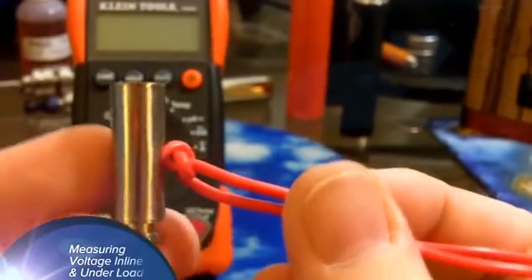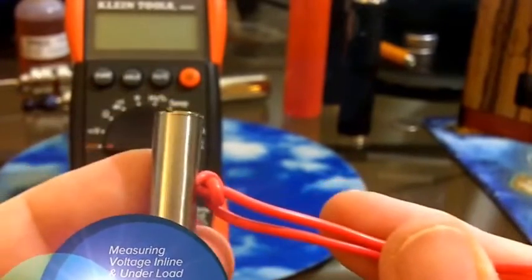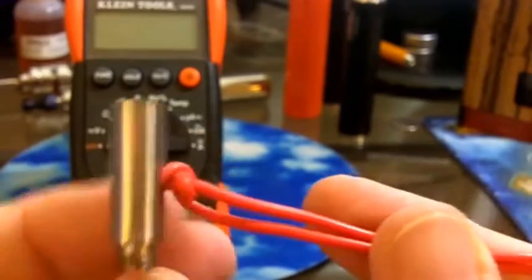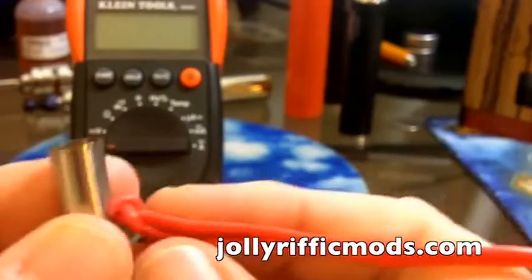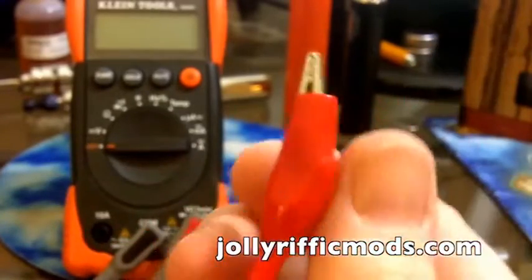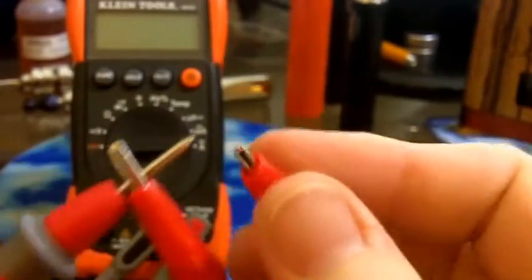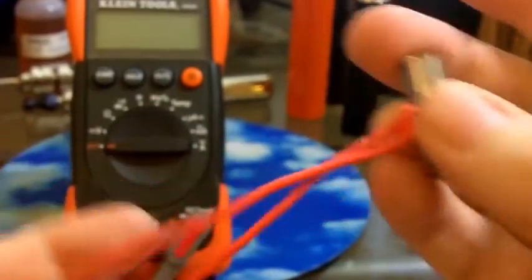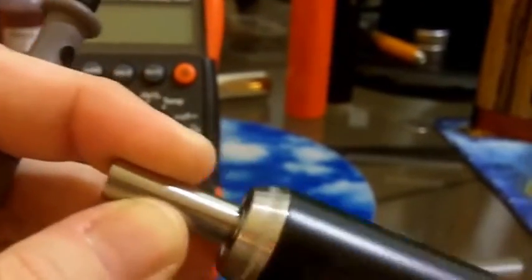Now the next advanced step requires some extra equipment. In order to test voltage inline and under load, I'm using this little adapter that was designed by Mario who made the Eclipse EQ, Lord's Shadow, and it's available at JollyRificMods.com. It's a 510 sealed connector, two 18 gauge wires with clips at the end. What you do is you put the clips on your positive multimeter connection and then you take the 510 and connect it to the mod that you want to test.